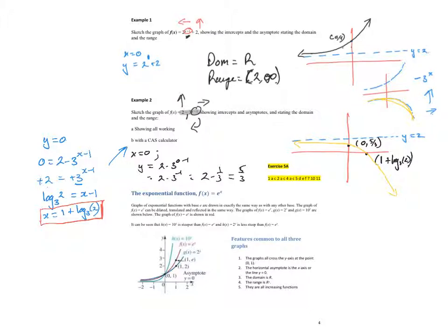The domain is R. The range - what's the maximum? It's 2, so it's from negative infinity up to 2. That's (-∞, 2), with round brackets because it's not inclusive.